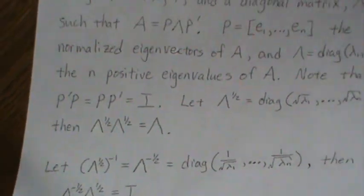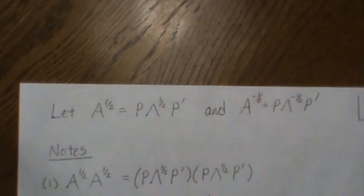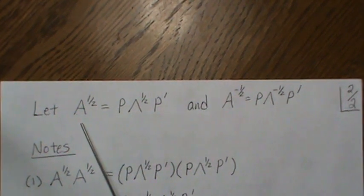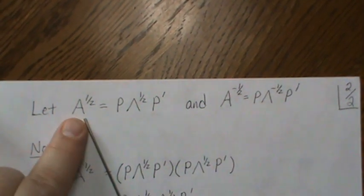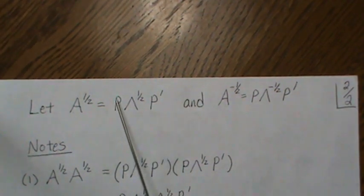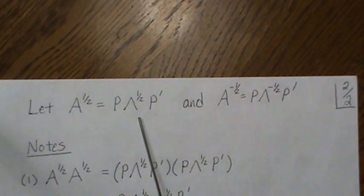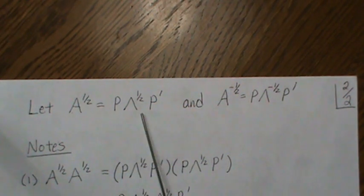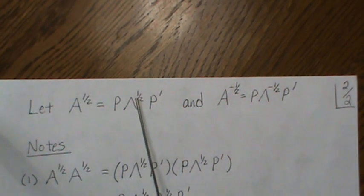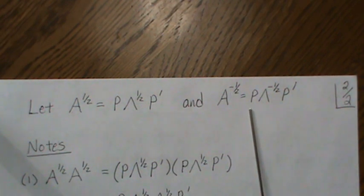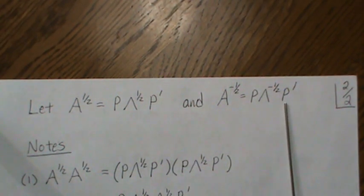So this is all background. The next page is what we're going to propose as the square root matrix. We propose that A to the one-half is P lambda to the one-half P prime. This is very close to the spectral decomposition of A — if this were just lambda and not lambda to the one-half, this would be the spectral decomposition of A. But we're changing this diagonal matrix to the square root of it. And we define A to the minus one-half as P lambda to the minus one-half P prime.